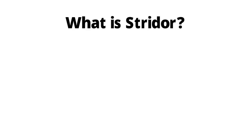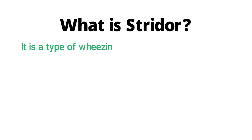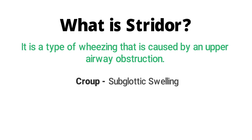In this video we're going to be talking about stridor. What exactly is stridor? Stridor is usually caused by an upper airway obstruction. It is often seen in croup, which is subglottic swelling, and it's also seen in epiglottitis, which is supraglottic swelling.